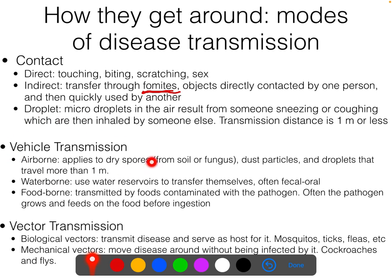Next is vehicle transmission — these are the 'borne' transmissions: airborne, waterborne, and foodborne. Let's talk about waterborne first. This is pretty obvious: the pathogen, whether a virus, bacteria, or something else, lives in water and you generally drink the water — that's how it gets inside you. One exception is Legionnaire's disease, which requires water forming mist that you breathe in, but that's pretty rare.